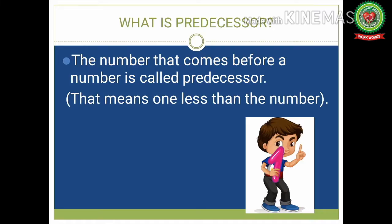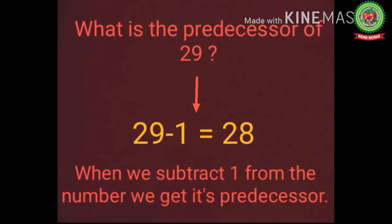What do you mean by predecessor? The number that comes before a number is called predecessor. That means 1 less than the number. Let me show you how it works. What is the predecessor of 29? We have to subtract 1 from 29. That is 29 minus 1 equals 28. So, the predecessor of 29 is 28. When we subtract 1 from the number, we get its predecessor.